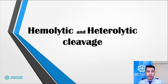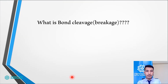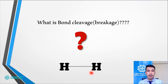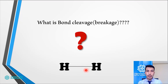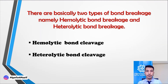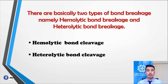So let's start. What is bond cleavage or bond breakage? Let's consider that we have a hydrogen molecule with a single bond between them — this is known as a sigma bond. As we have studied, the first covalent bond between two atoms is a sigma bond; the next ones become pi bonds. This is a single, very strong bond. When hydrogen wants to react, it is obvious that this bond must break. There are basically two kinds of breakage: the first is hemolytic cleavage and the second is heterolytic cleavage.